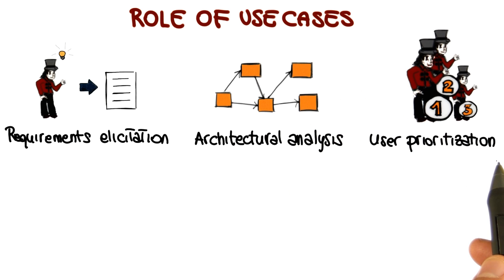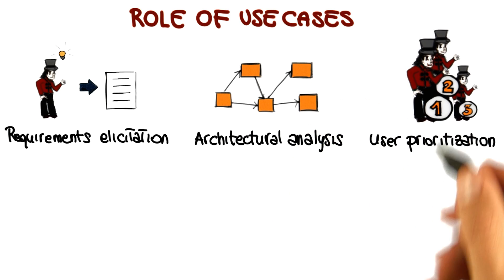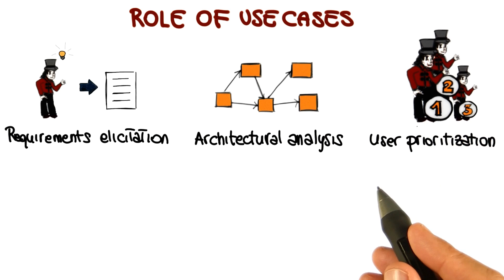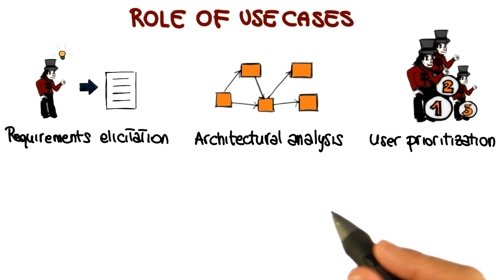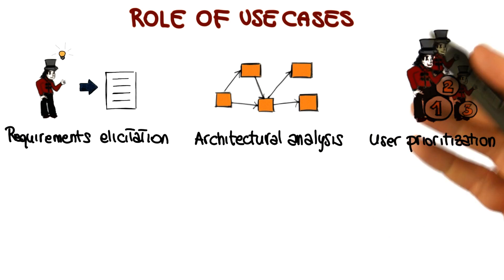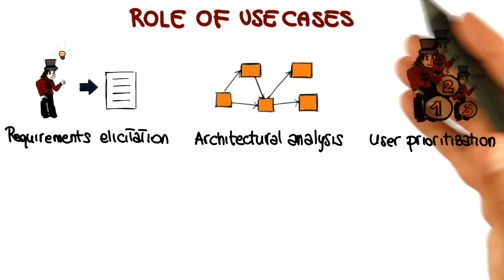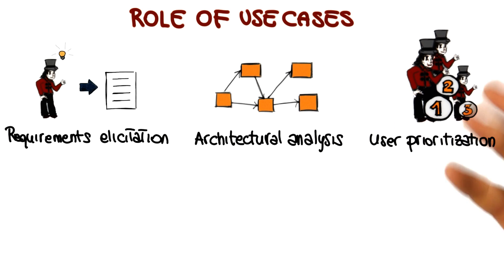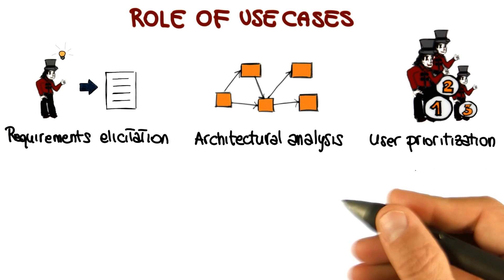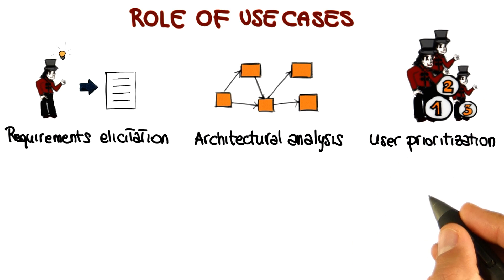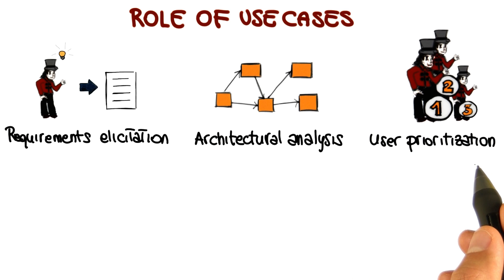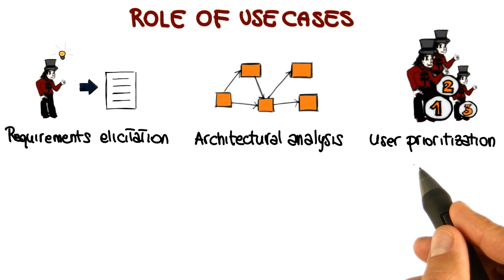Use cases can be used for user prioritization. For example, imagine having multiple actors in the system and you might want to prioritize some of them. Using the banking system example, we might want to first provide functionality for the administrators of the bank, and only in a second time provide functionality for the customers, because if the administrator cannot perform any operation, the customers cannot use the system. So they can be used to prioritize the users or actors, and therefore define which part of the system should be built in which order.